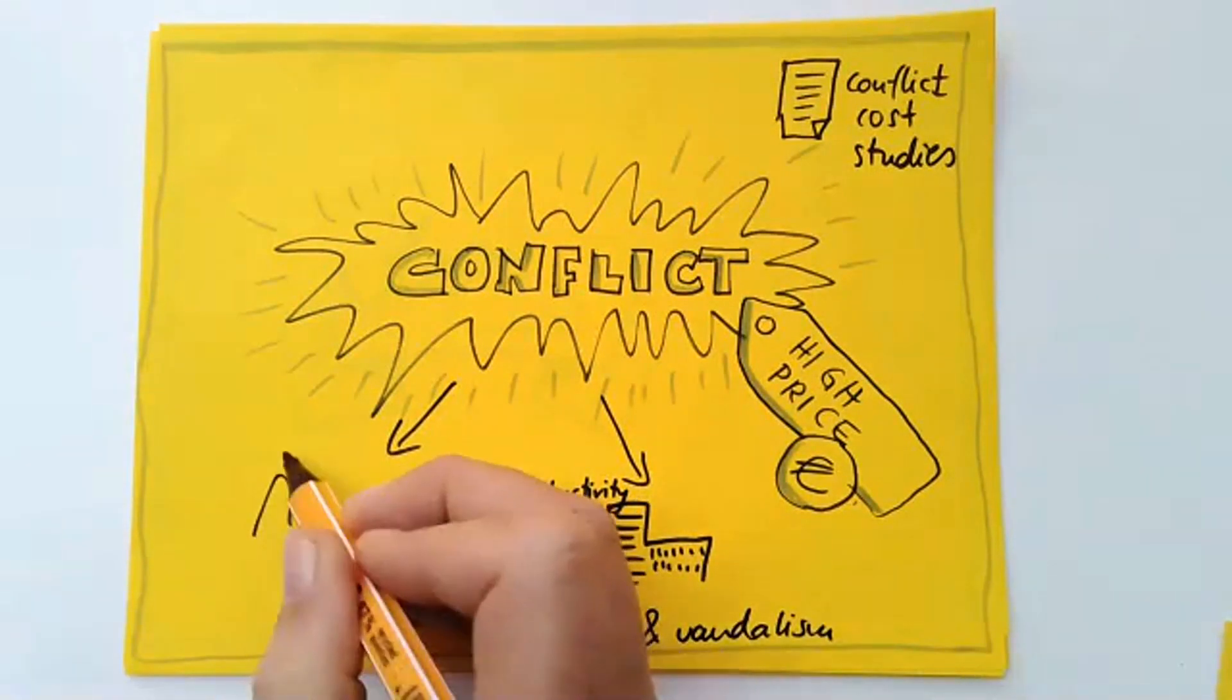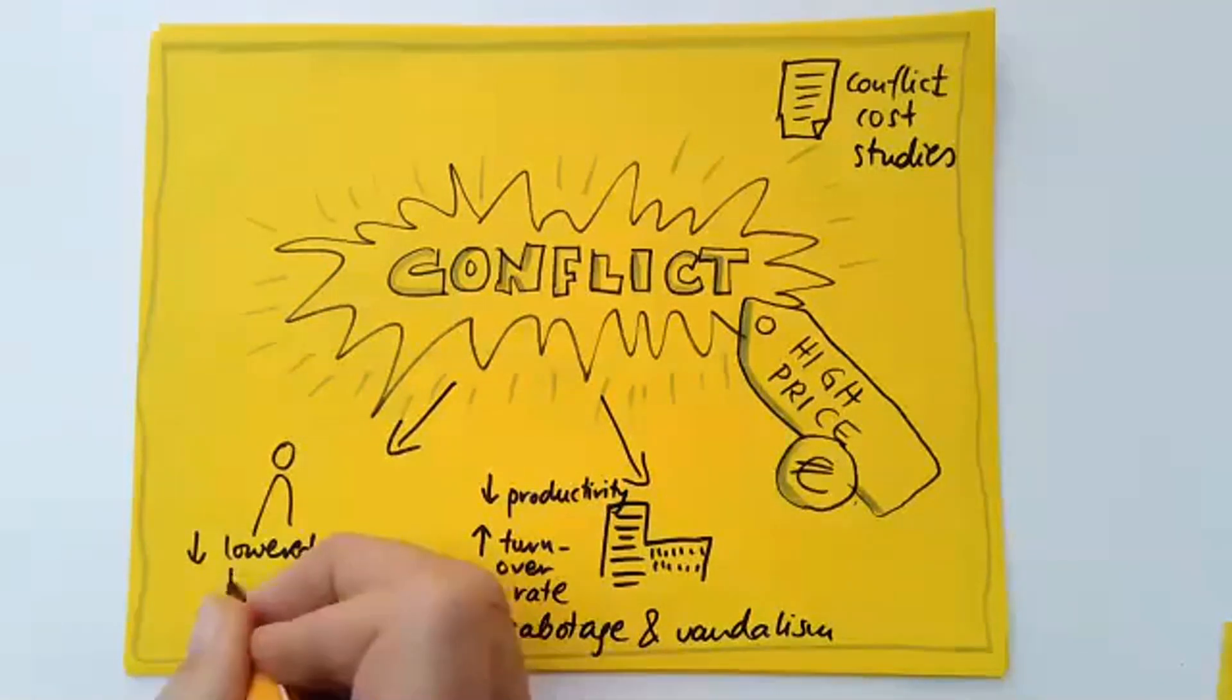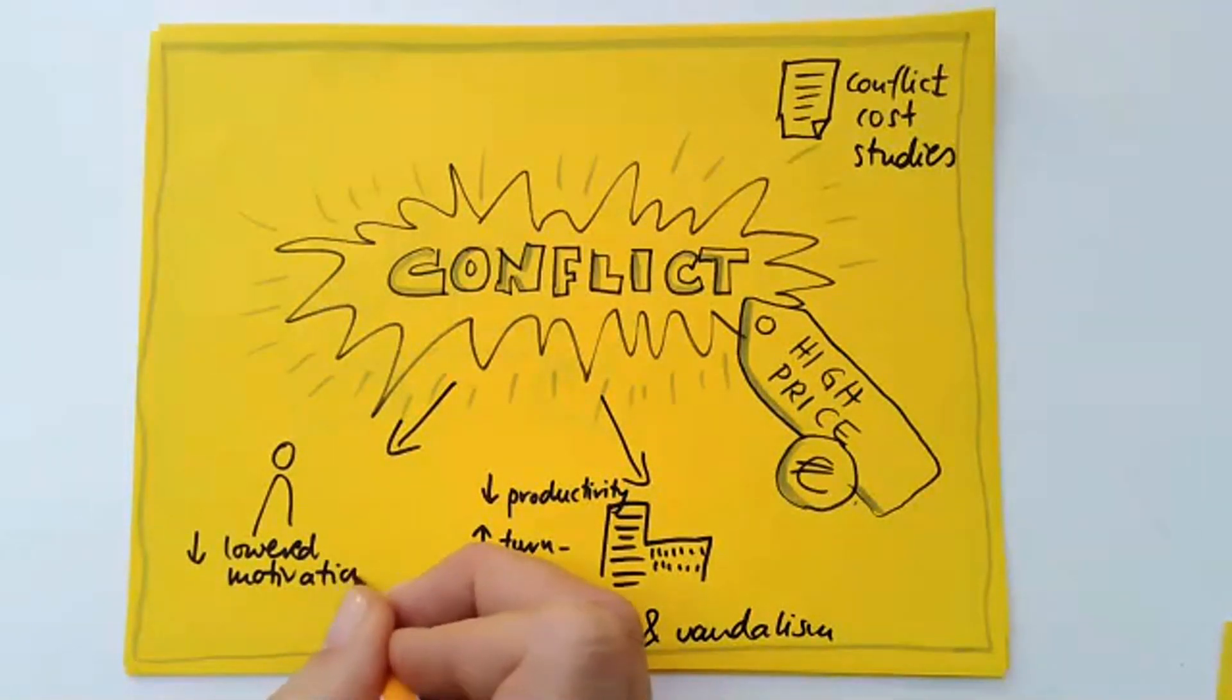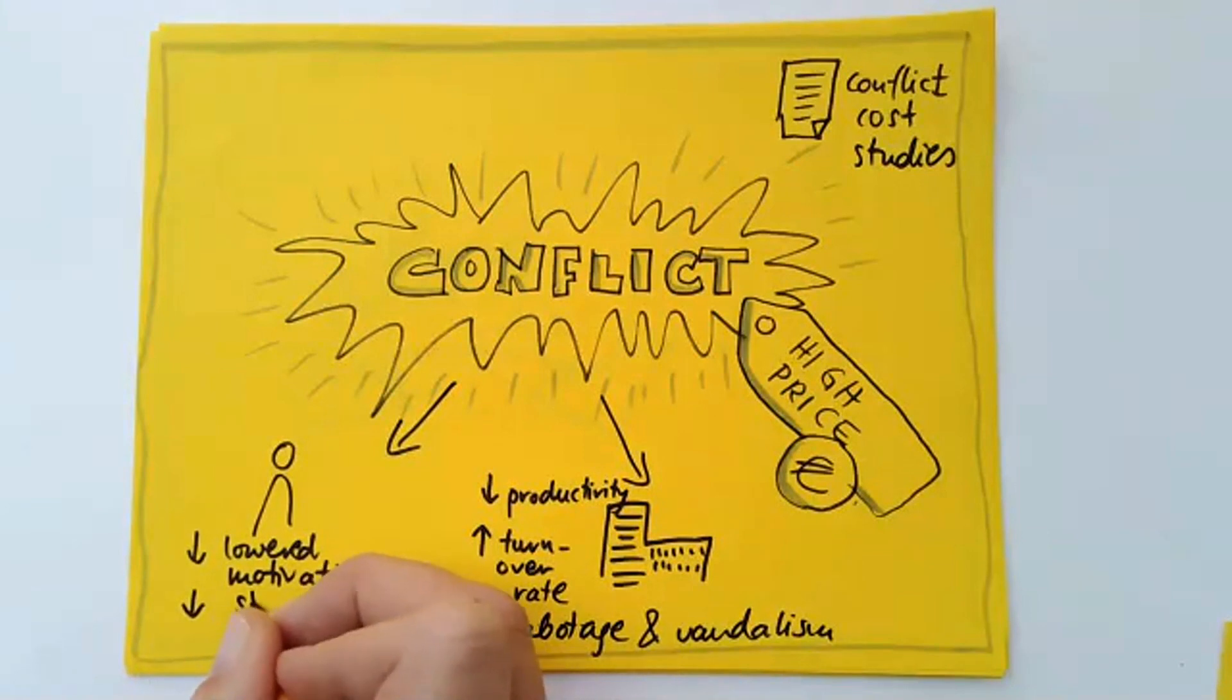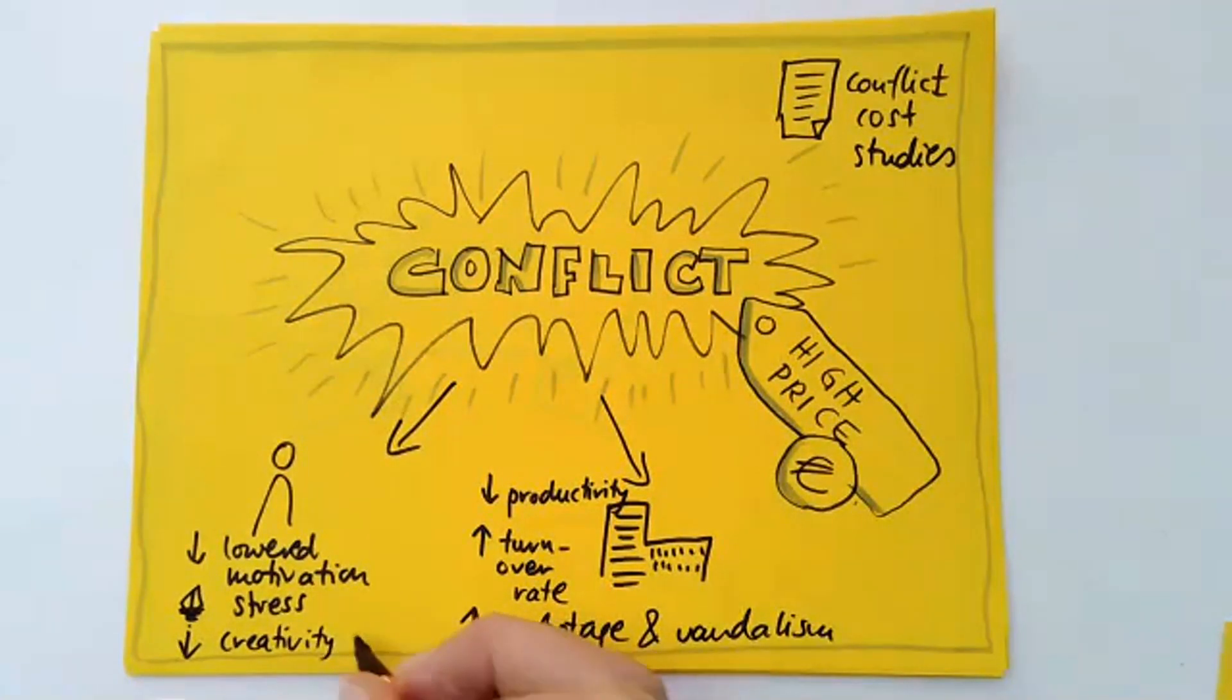If you look on the individual, of course, she or he suffers as well. And we can see that in lowered motivation, in a higher degree of stress. So stress goes up. But what goes down is creativity and decision making. And with this, we can also see this is affecting the company. And if we think about creative procedures, design thinking, software development, and so forth, there are lost opportunities if individuals suffer from conflict.